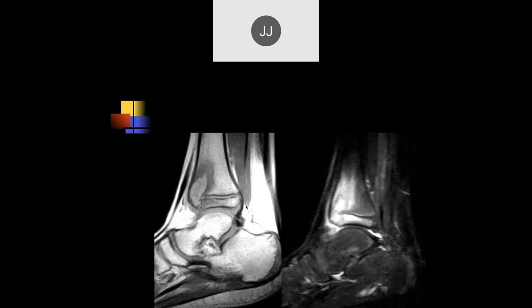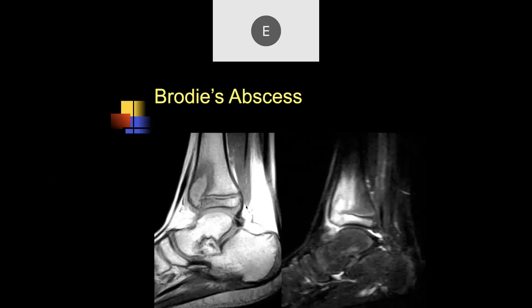Looking at the anterior distal tibia of a young pediatric patient — note the open growth plates — there's a fluid collection involving the metaphysis extending to the epiphysis; I'd be concerned about an abscess. This is a classic Brodie's abscess. Usually due to bacteremia where bacteria get dislodged in a small arteriole in the metaphysis near the growth plate. If allowed long enough, it'll go through the growth plate cartilage and extend into the epiphysis, as we see here — you'd like to pick these up earlier.